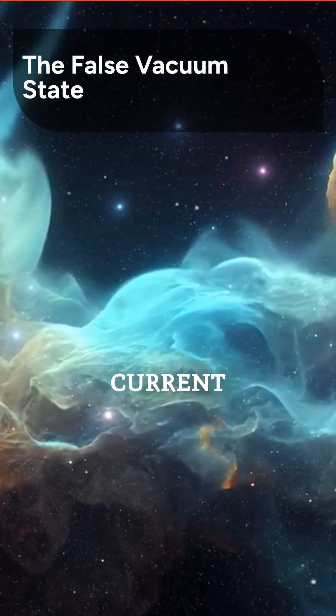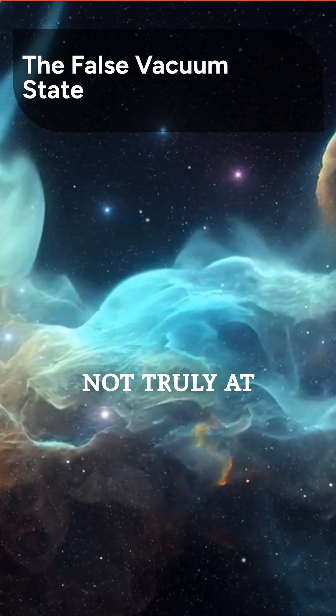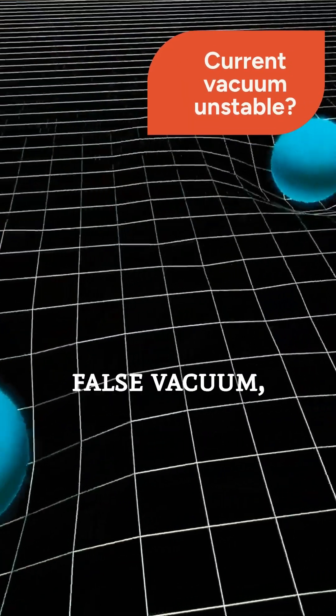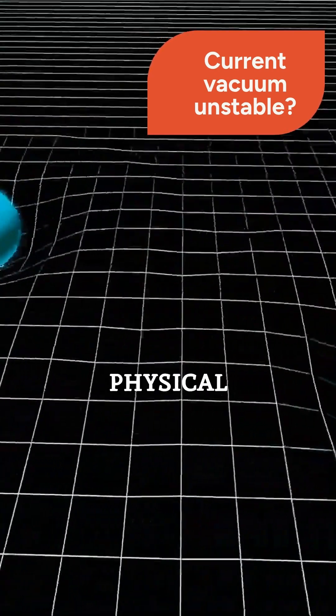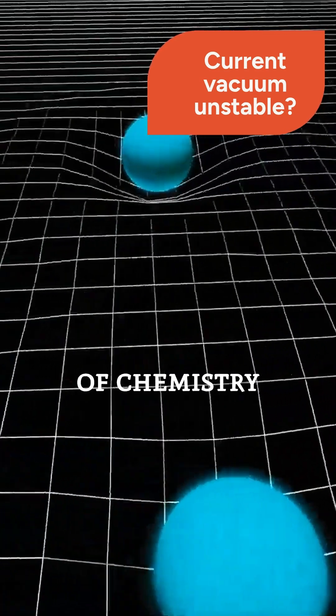Our universe, according to current physics, may exist in a false vacuum. It's stable for now, but not truly at its minimum energy potential. If we are in a false vacuum, it means our current physical constants, the masses of elementary particles, and even the laws of chemistry are potentially unstable.